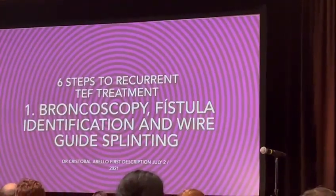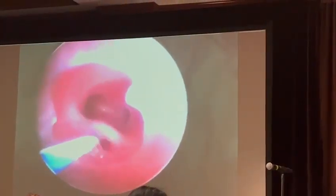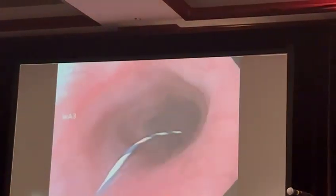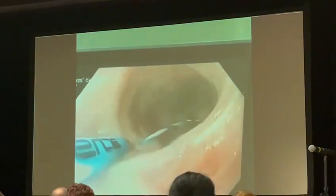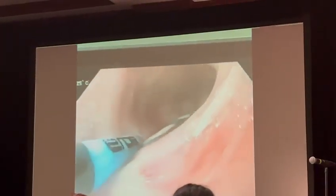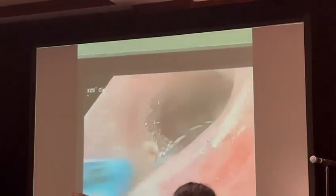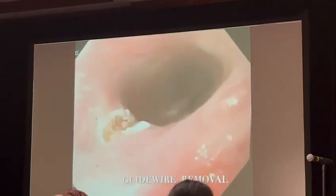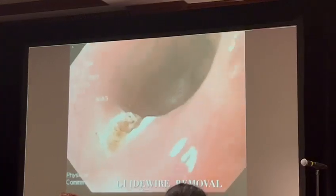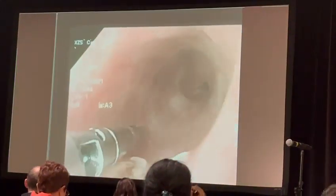This is the fistula. This is the bronchoscopic fistula identification — passing the guide wire to the esophagus, identifying the site of the fistula entrance in the esophagus with the plasma or cavity. You can rewire the edge of the fistula and then apply the mucosal clips, as shown in this maneuver.